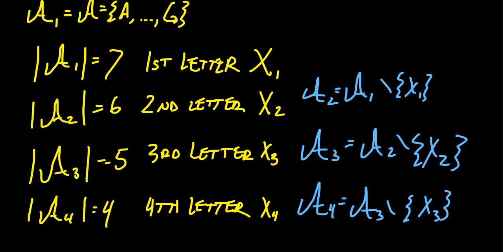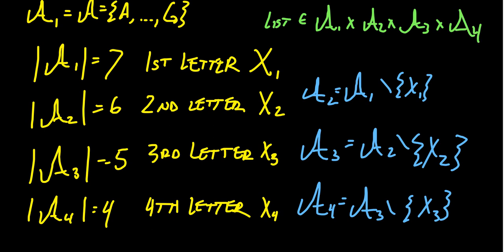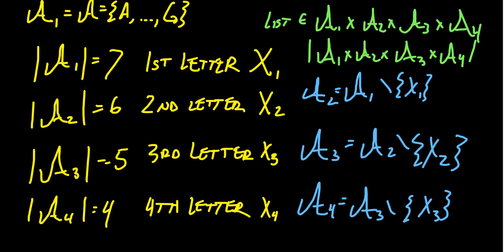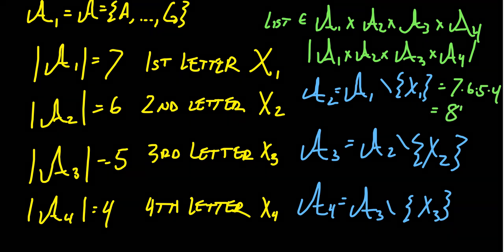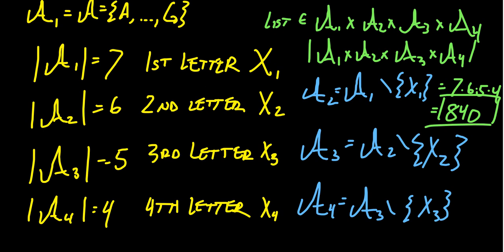We're looking for lists contained inside A₁ × A₂ × A₃ × A₄. By the multiplication principle — because once you remove the letter already used, the next decision is in fact independent of previous ones — we get the product 7 × 6 × 5 × 4 = 840 words without repetition.